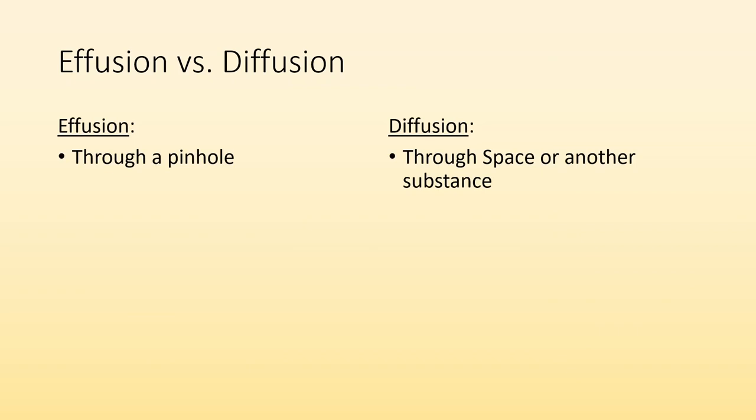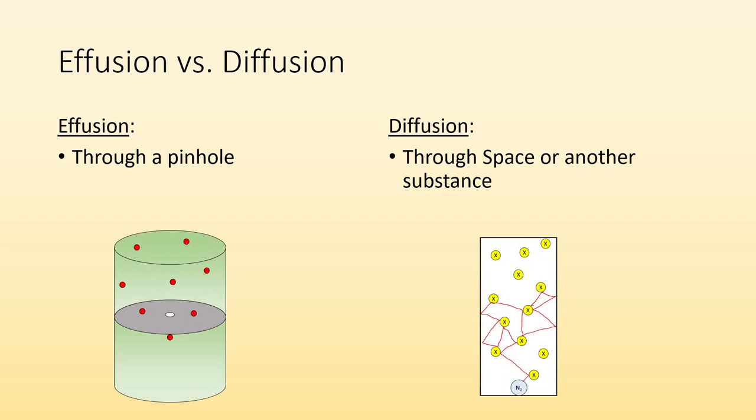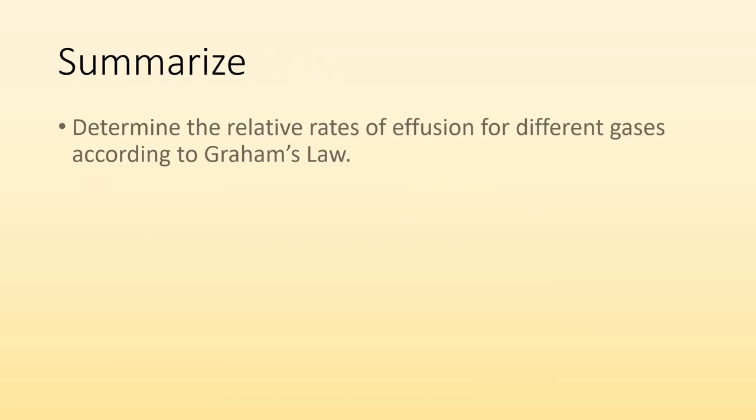All right, effusion versus diffusion. How to keep these two things straight. Effusion is through a pinhole. Diffusion is through space or another substance, right? And then as far as diagrams go, this is what comes to mind for me. Effusion, it's through a pinhole. Diffusion is through other substances, right? We have r1 over r2 equals the square root of M2 over M1. We got Graham's law for effusion. And diffusion, important thing is mean free path.